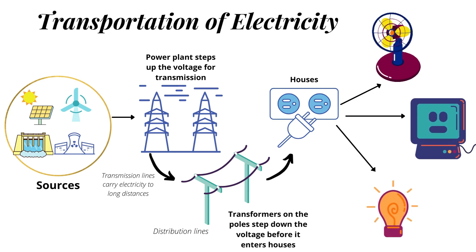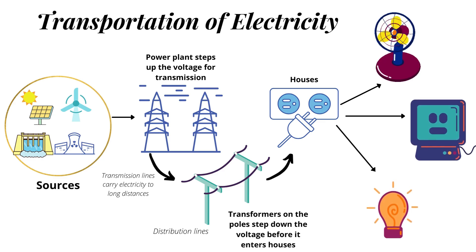Transformers on the poles step down the voltage before it enters the houses. And that is how we obtain electricity on one click or on one button at our homes. Thank you for watching.